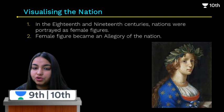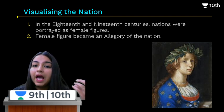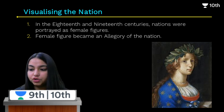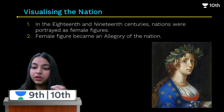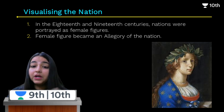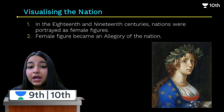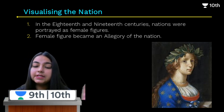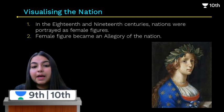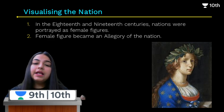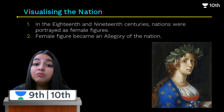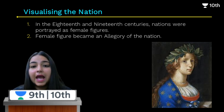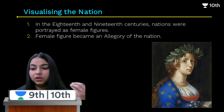Now, first understand that these female figures were used to represent the nation as an allegory. For example, today we call India 'Bharat Maata' — our motherland. India is not an actual mother, but we have portrayed it as a female figure. So the female figure became an allegory of the nation.